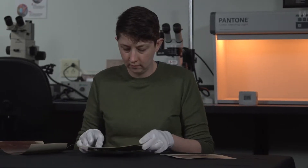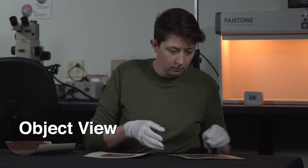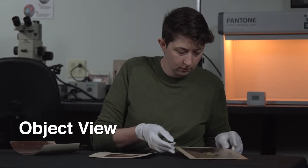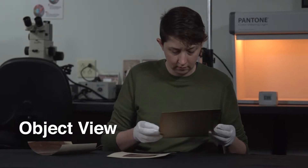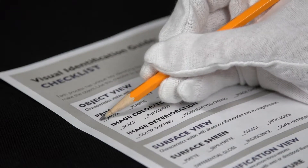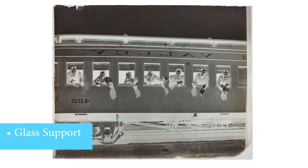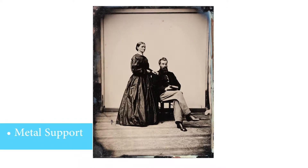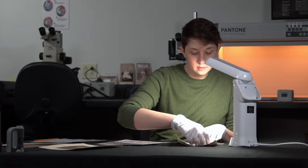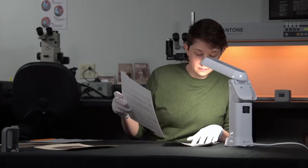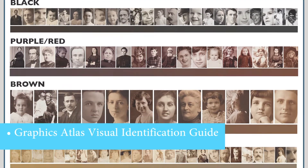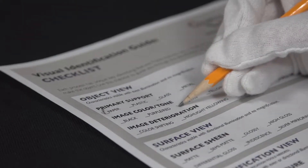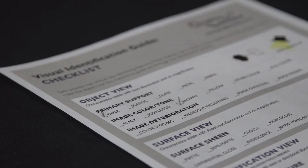Start with the object view, which includes features that can easily be observed with even illumination and no magnification. First, identify the primary support of the material. Any material other than paper automatically narrows down the possibilities. Then, look at the image color. Photographic images are typically either monochromatic or full color.